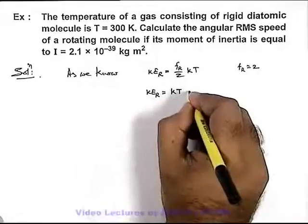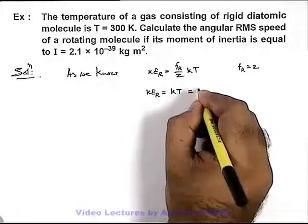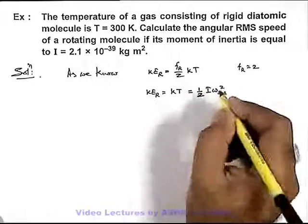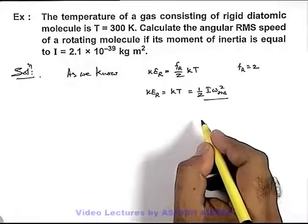And the kinetic energy for rotational motion can be written as half I ω_rms squared, as kinetic energy of rotation is half I ω squared.